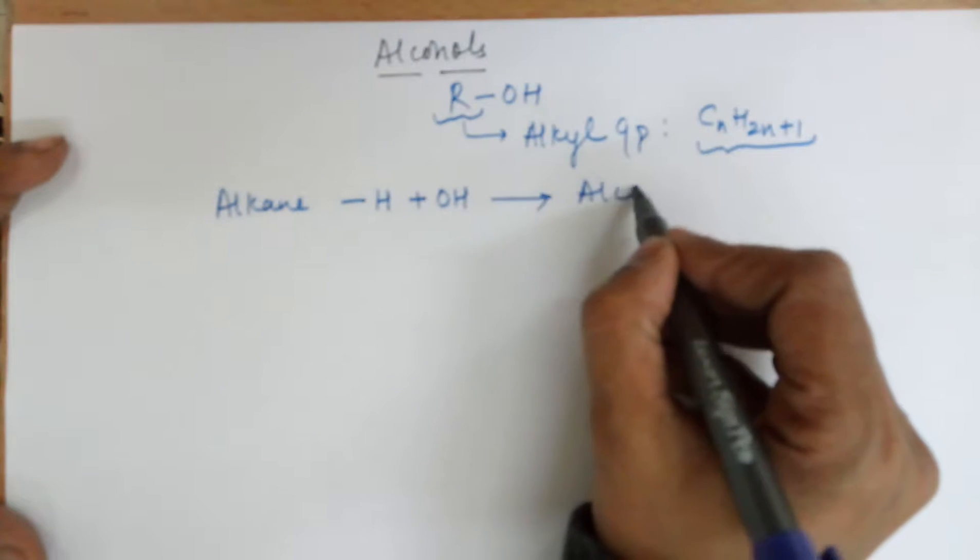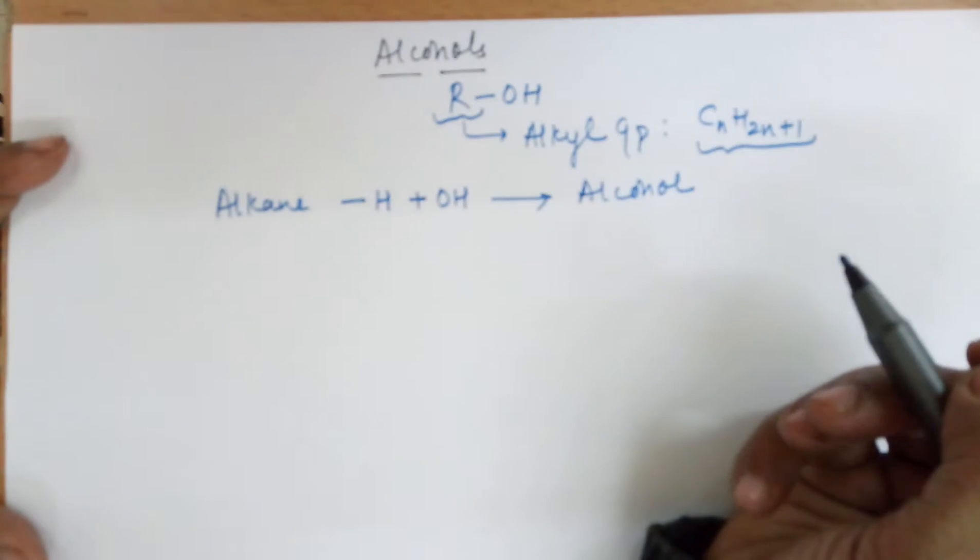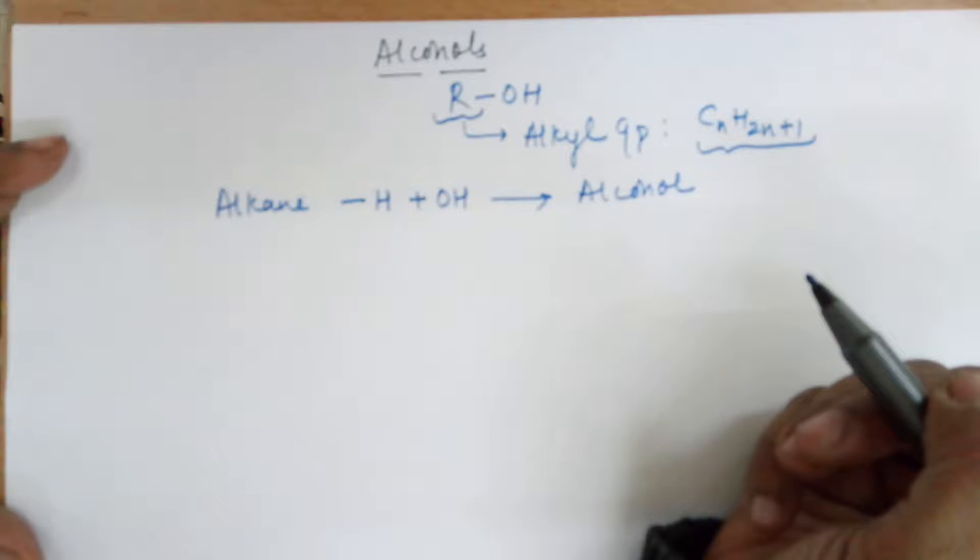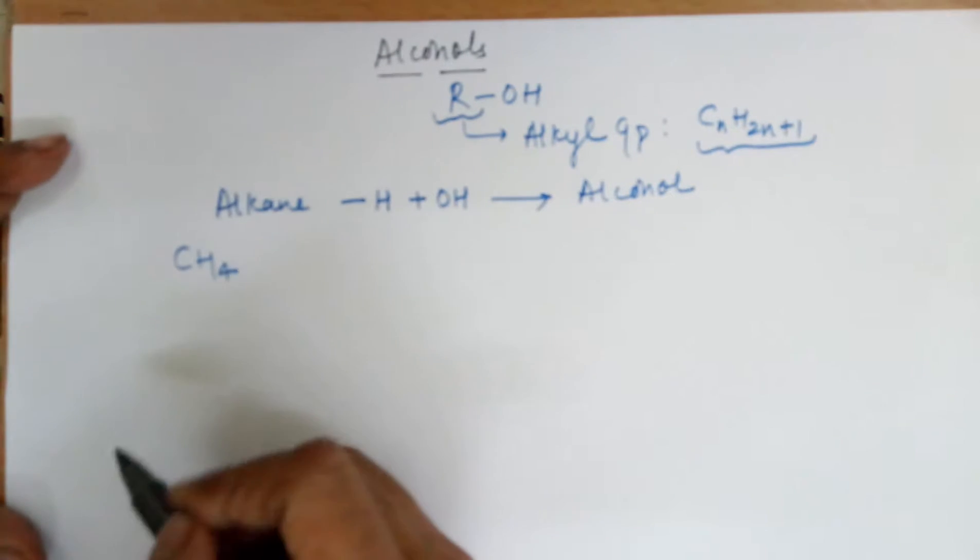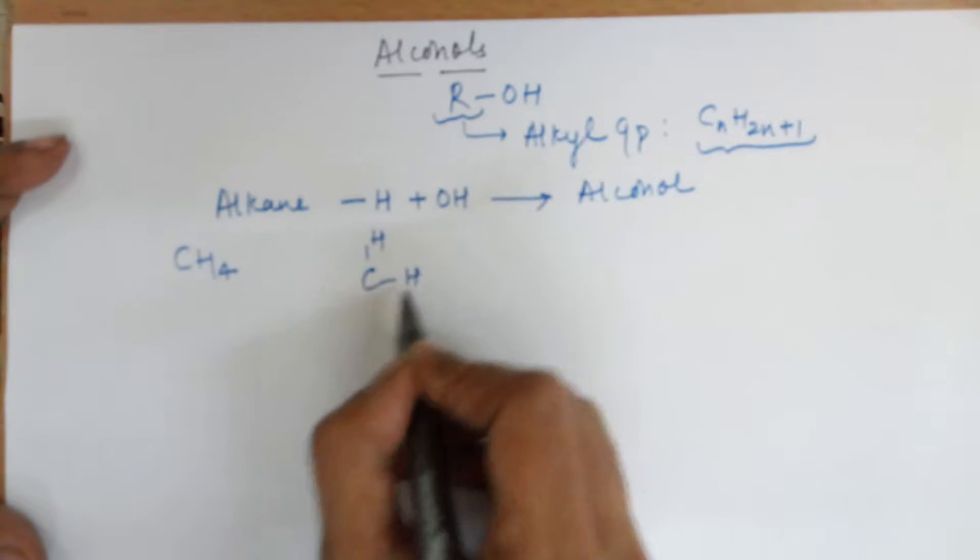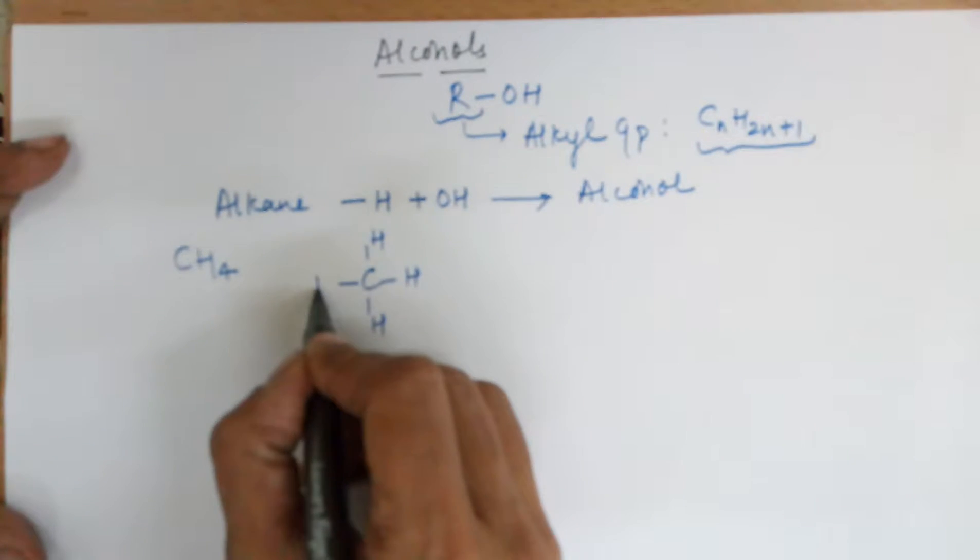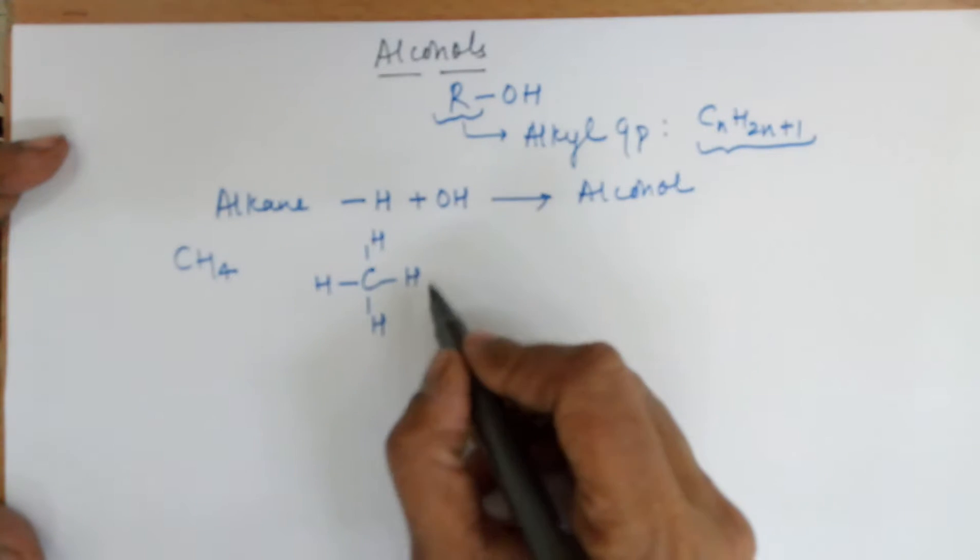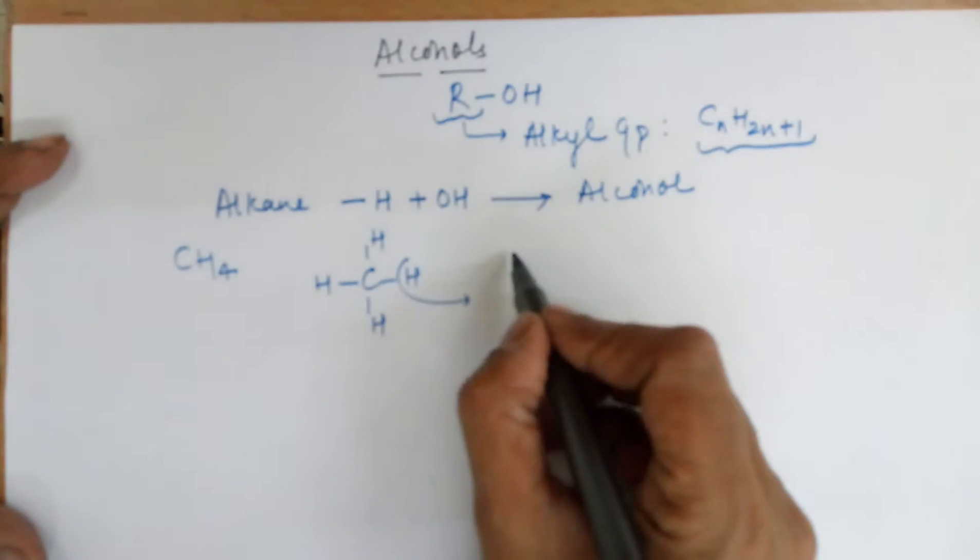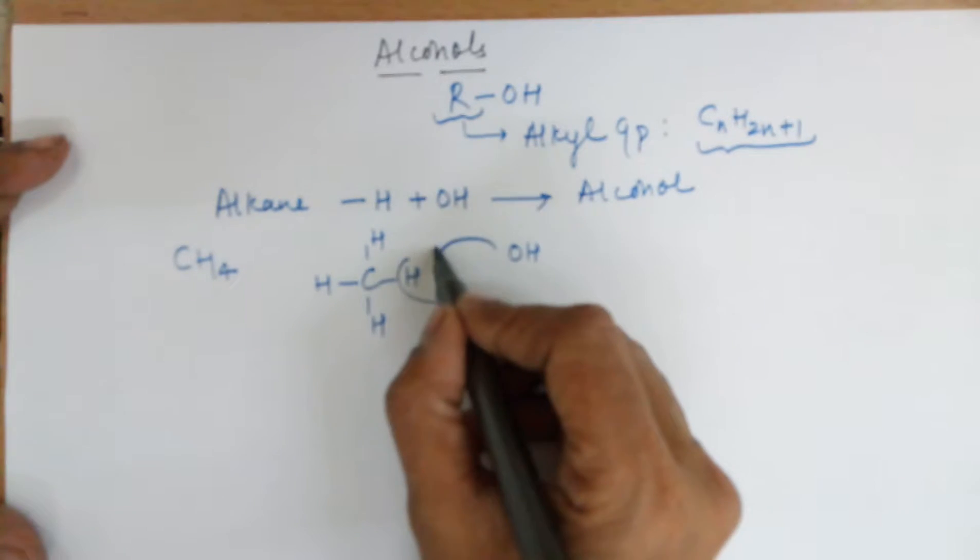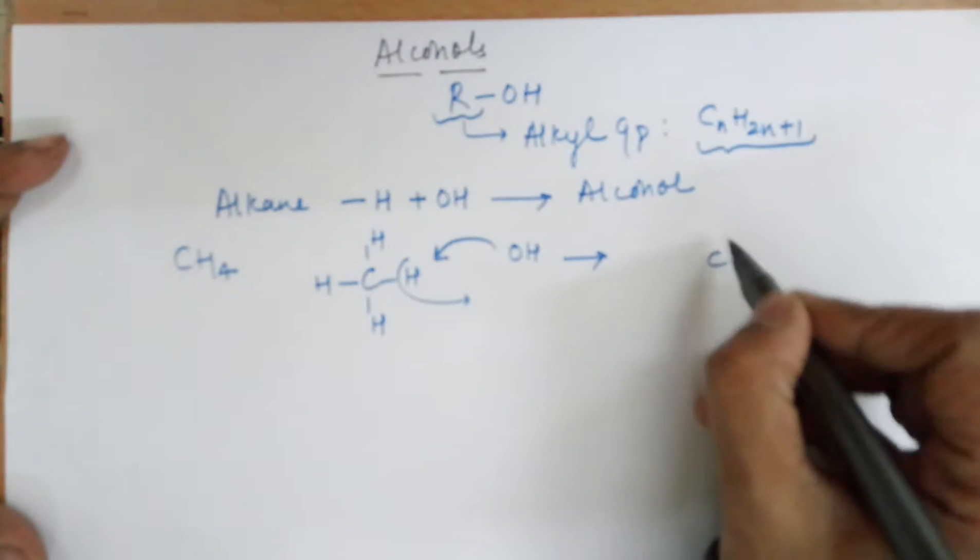Let me give you an example. The simplest alkane we have is methane. The formula for methane is CH4. The structure of methane is carbon having four hydrogens around it. To transform it into an alcohol, you need to remove any one H and add an OH. Hence, you make it into CH3 with an OH, transforming it into an alcohol.